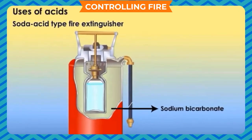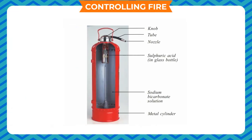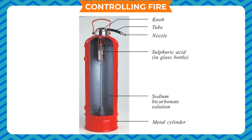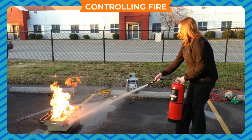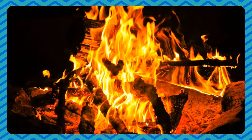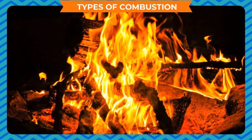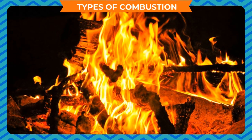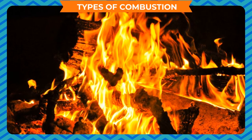A soda-acid fire extinguisher consists of a metallic cylinder having a knob and a nozzle tube. The cylinder is filled with a saturated solution of sodium bicarbonate. A glass bottle containing concentrated sulfuric acid is kept inside the metal cylinder as shown in the figure. When we strike the knob of the extinguisher, it forces the water solution out through the nozzle. The mixture of liquid and carbon dioxide extinguishes the fire. Other fire extinguishers that can be used are foam type and carbon tetrachloride fire extinguishers. Combustion may either be complete, incomplete, rapid, spontaneous, or explosive.